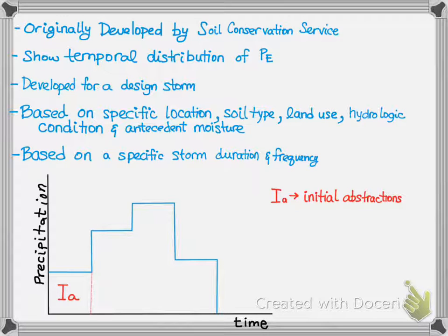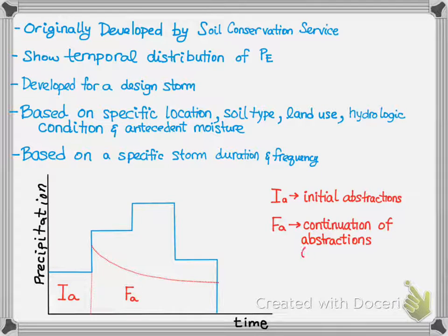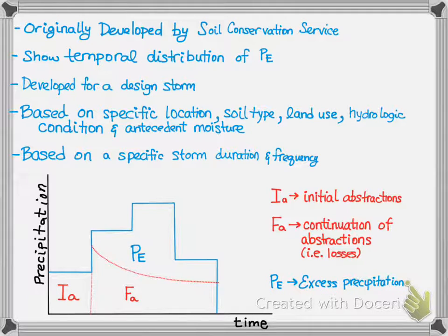Next, you will have the losses, FA. This is continuation of abstractions, even with the start of runoff. And finally, you have PE, or excess precipitation.